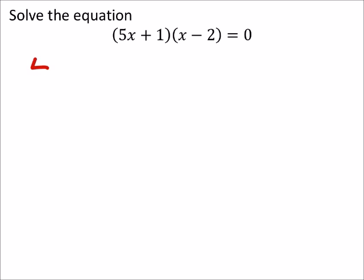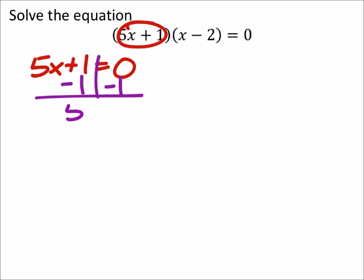Alright, so I need 5x plus 1 to be zero, because if this is zero, zero times anything is zero. It doesn't matter what x minus 2 would be. So, if I were to solve this equation, I would subtract 1 from both sides, and I would get 5x equals negative 1, then I would divide both sides by 5, giving me x equals negative one-fifth.